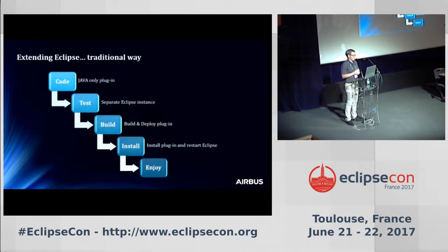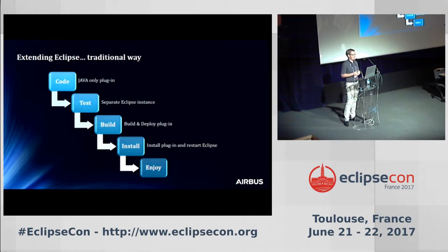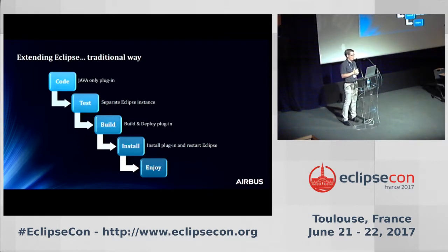To explain how EASE works, it's best to look at how we extend Eclipse the traditional way. You create an Eclipse plugin, code it in Java, test it in a separate Eclipse instance, and when you're happy with it, you build it and deploy it into a P2 repository. Even for an Eclipse plugin developer some steps are tedious, and obviously for an end user it's completely not possible.